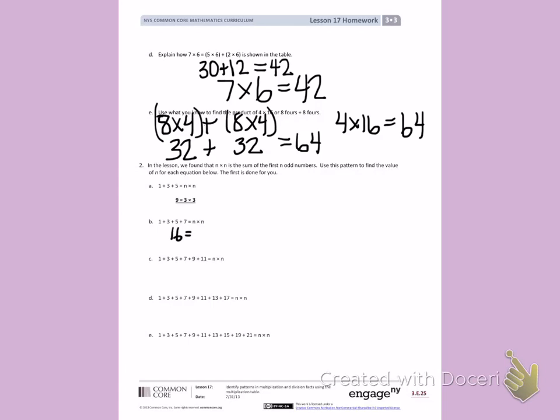If I look at my multiplication chart, so flip your paper over, 16 is the product of two of the same numbers, which is 4 times 4.